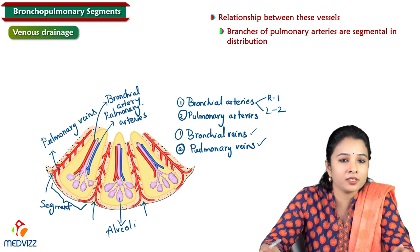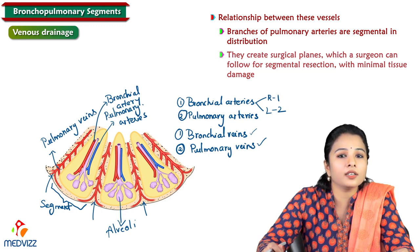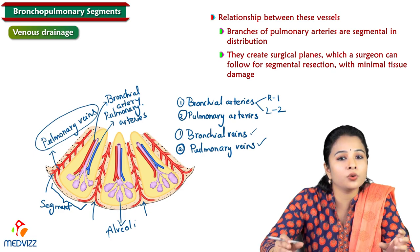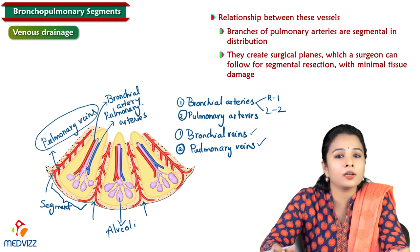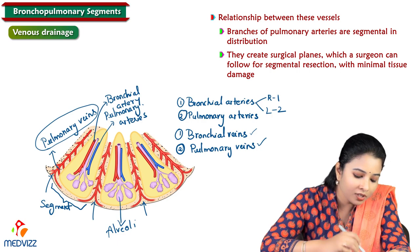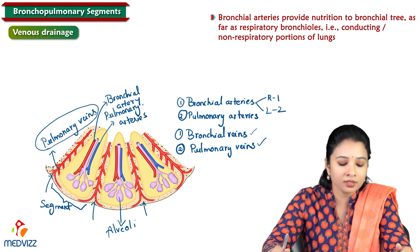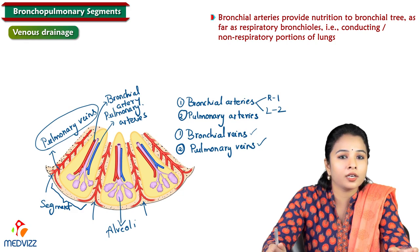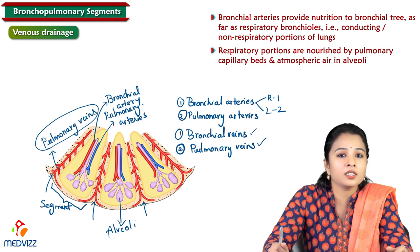Surgeons follow these pulmonary veins during segmental resection — the removal of a segment — with minimal tissue damage. The bronchial arteries provide nutrition to the bronchial tree as far as the respiratory bronchioles, covering the conducting and non-conducting respiratory portions of the lungs. The respiratory portion is nourished by the pulmonary capillary bed and atmospheric air in the alveoli.